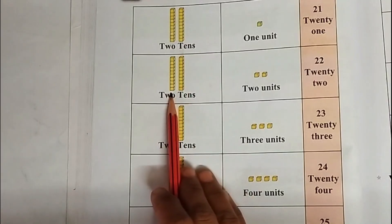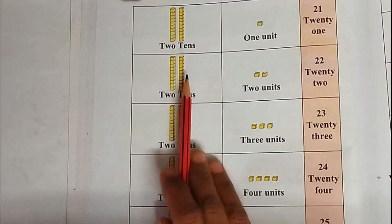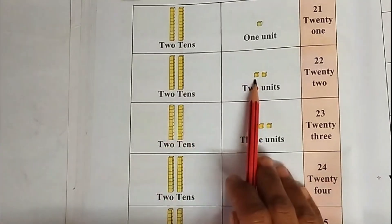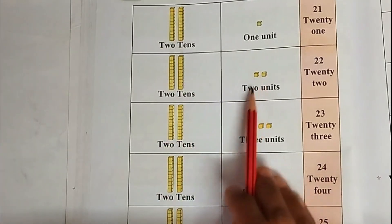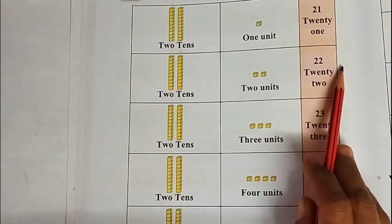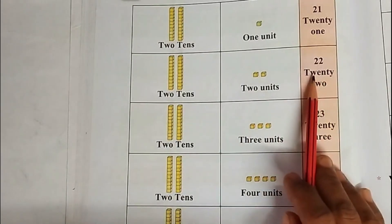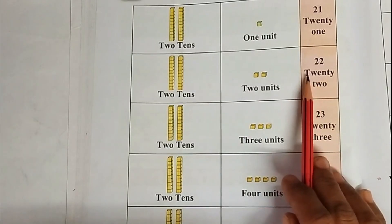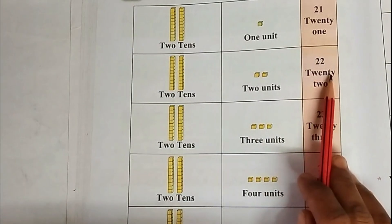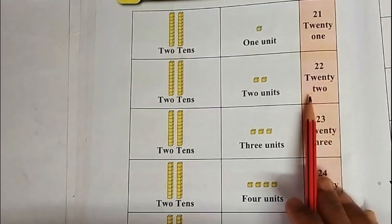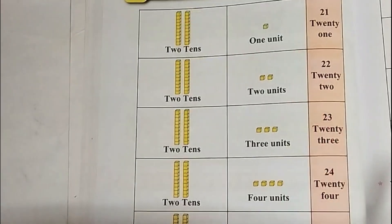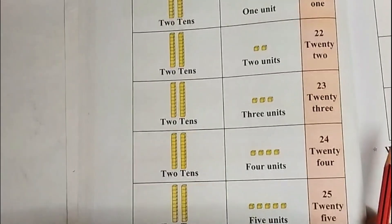21. Next, 1 tenth and 2 tenths, 2 units: 22. In figure: 22. In words, how do we write 22? T-W-E-N-T-Y-T-W-O: 22.